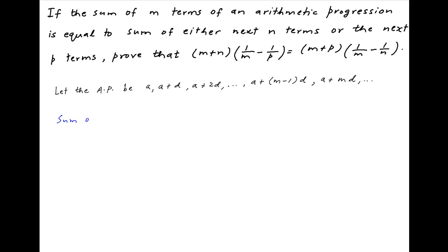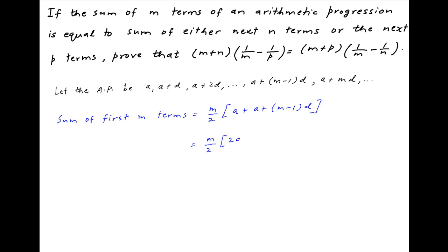Therefore the sum of the first m terms of this arithmetic progression is equal to m upon 2 times, in brackets, the sum of the first term and the mth term — that is a plus a plus m minus 1 times d — and this equals m upon 2 times in brackets 2a plus m minus 1 times d.